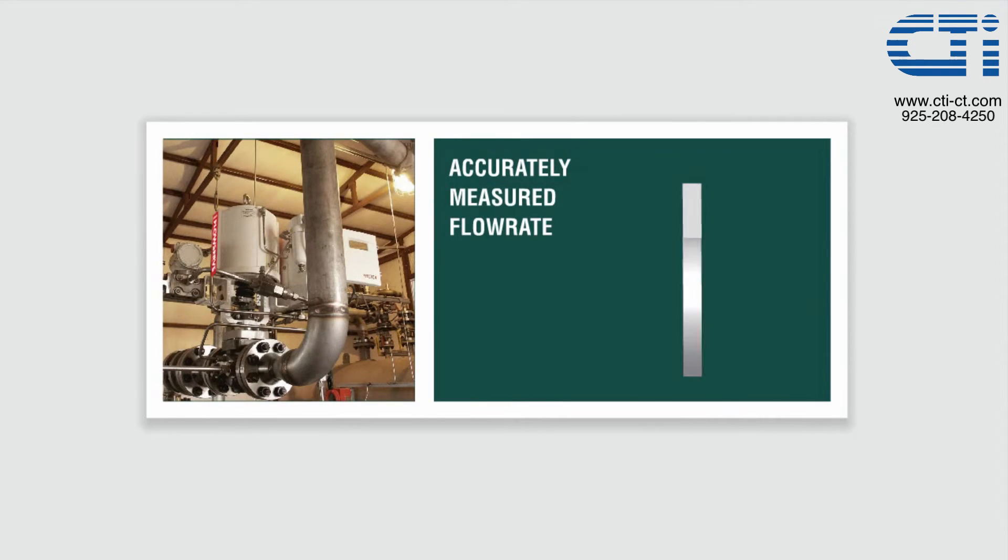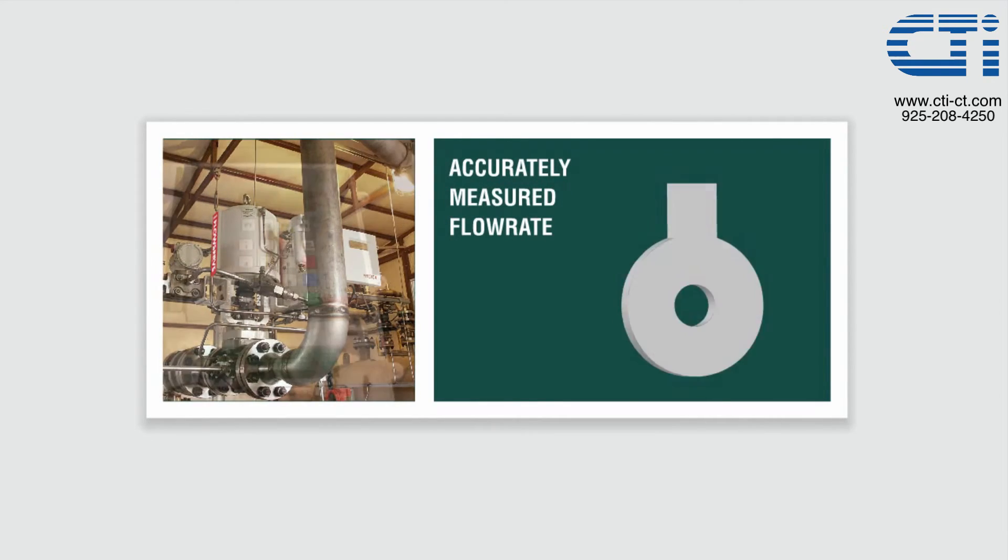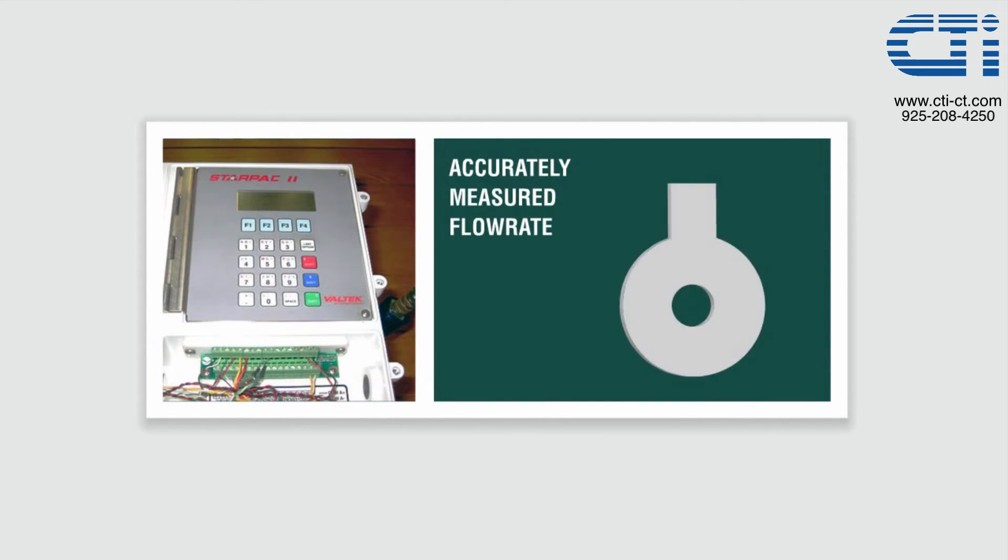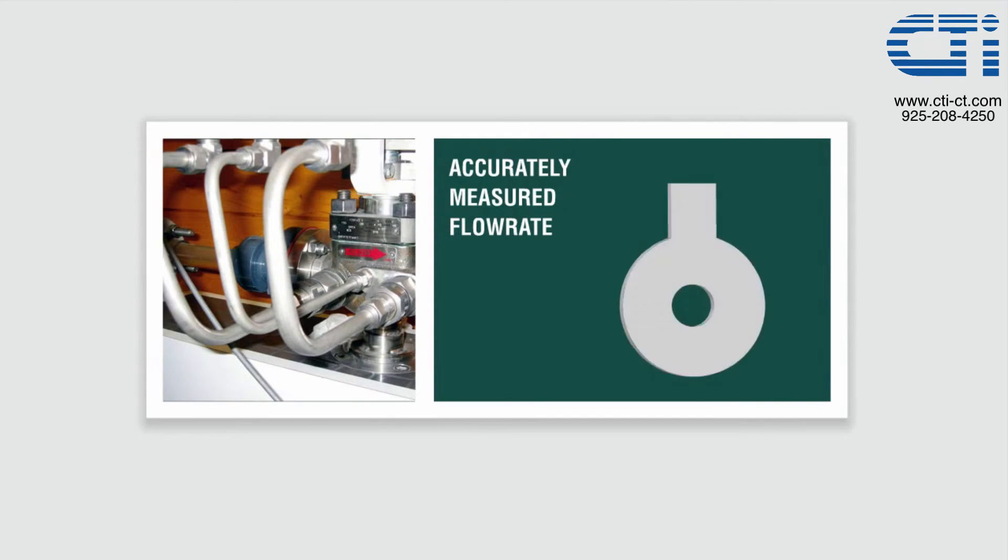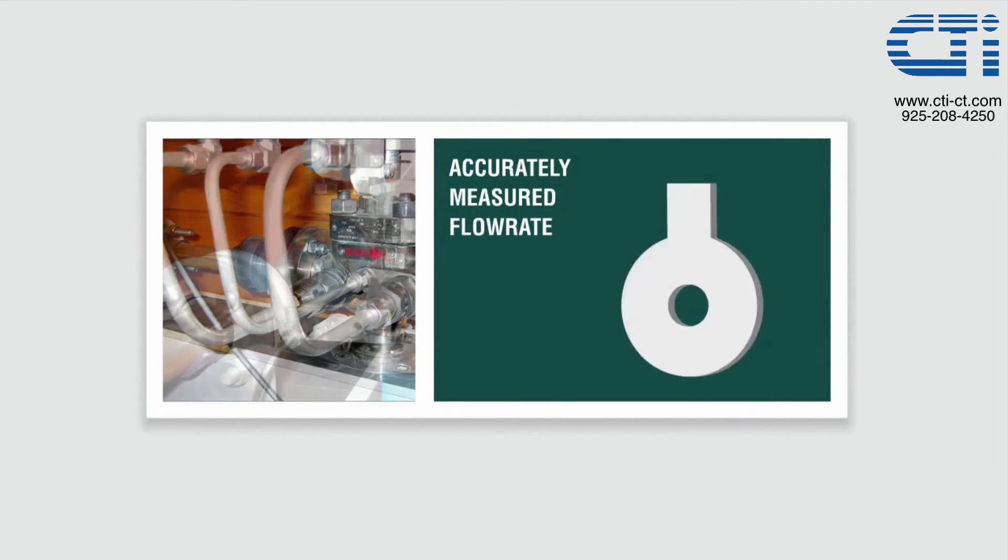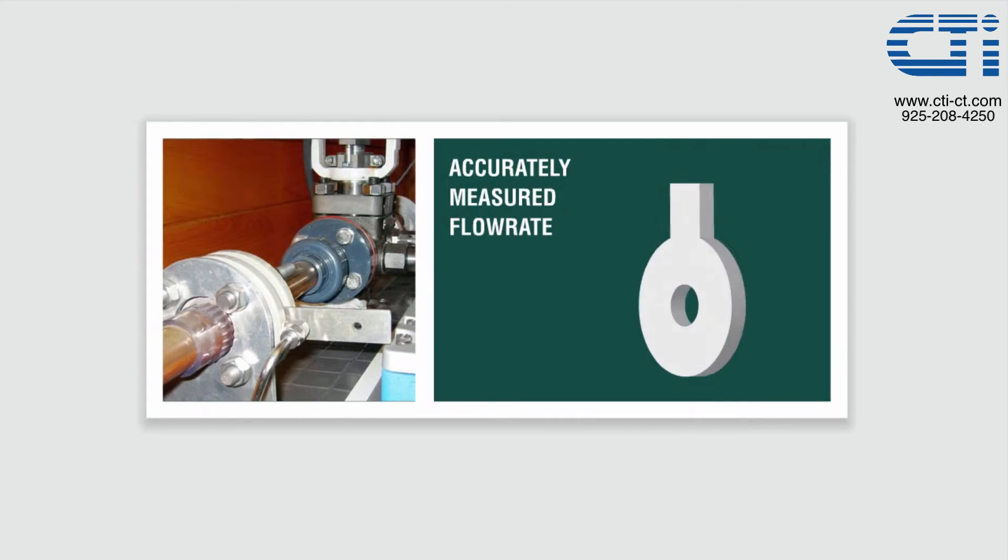The StarPak is a lot like an orifice plate, but with 10 to 50 times the measurable flow range and without the worry of leading edge wear and pipe insertion problems. The StarPak continues to accurately measure flow rate even if the trim wears because StarPak measures the overall flow capacity of the valve, which is unaffected by normal trim wear.